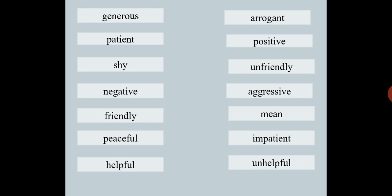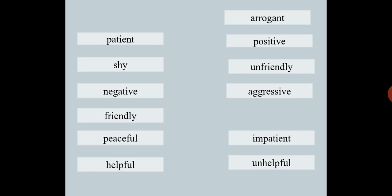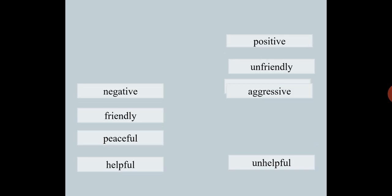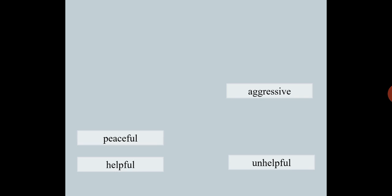Now, let's start. Generous — mean. Patient — impatient. Shy — arrogant. Negative — positive. Friendly — unfriendly. Peaceful — aggressive. And the last, helpful — unhelpful.